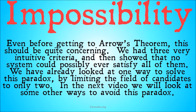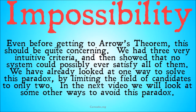Even before moving on to the more complicated theorem, this should be quite concerning. We had three very intuitive criteria and showed that no system could possibly ever satisfy them all. We've already looked at one way to solve this paradox — limiting the field to only two candidates — and proponents of a two-party system will point to that as a strong argument for getting rid of third parties. But in the next video, we're going to look at other ways to avoid this paradox, especially for the proponent of the third party.